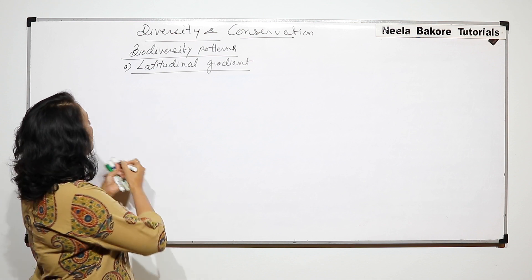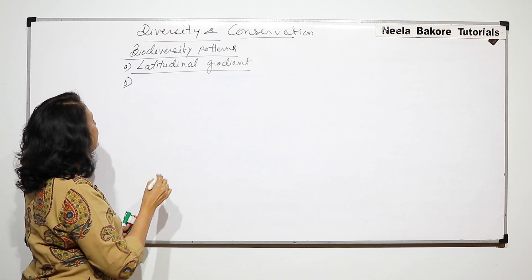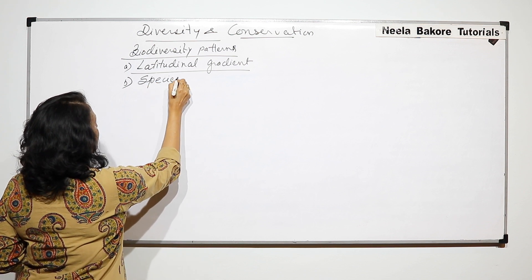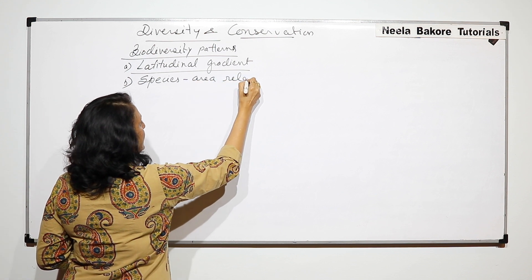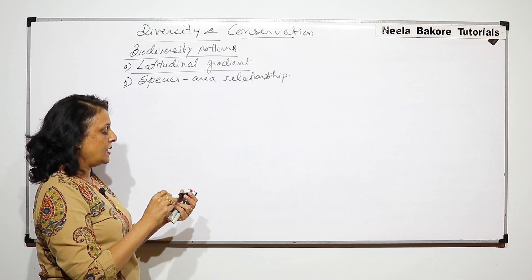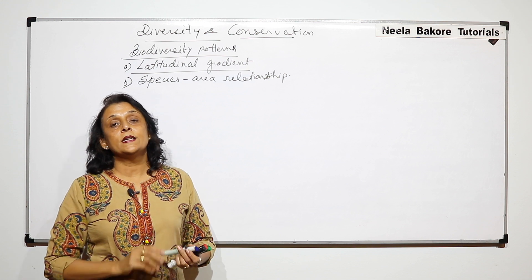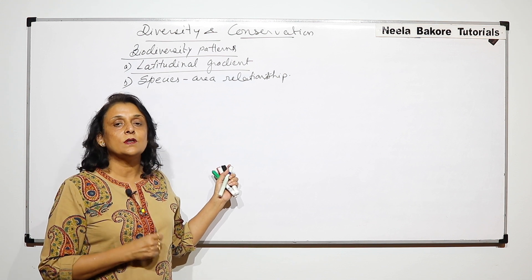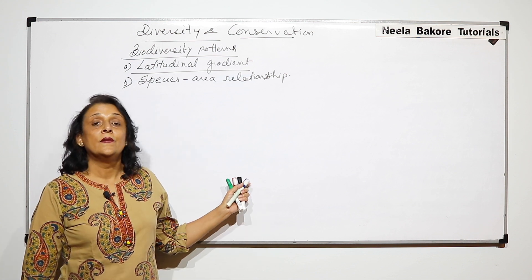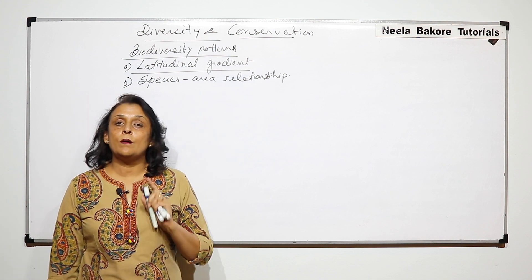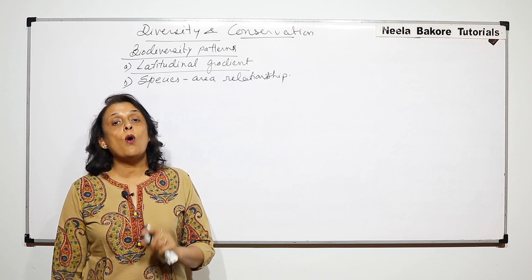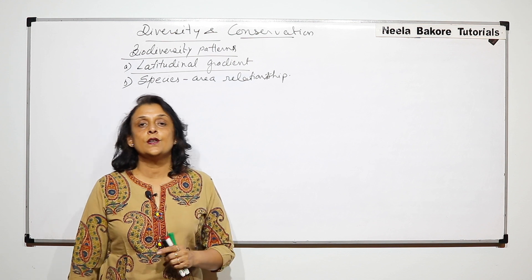Now let us take one more biodiversity pattern, and this is called the species-area relationship. According to this pattern, the statement says that if we go on increasing the area, the species diversity is going to increase.